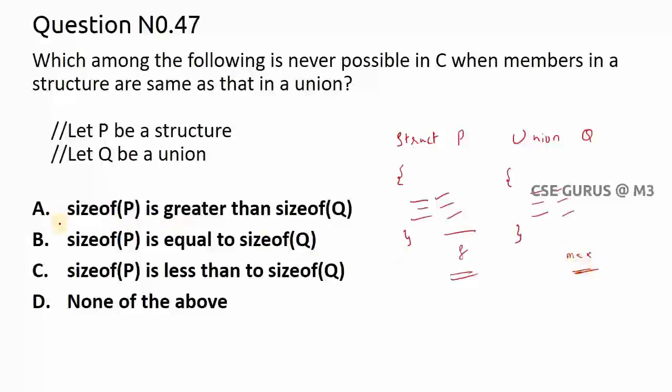Now if you see in the first option, sizeof P is greater than sizeof Q, maybe it is possible. Why? Because size of structure is greater than size of Q, definitely it is possible. Because here you have the variables, maybe same variables here also, but here separate memory. That's why here it may be greater, here it may be less.